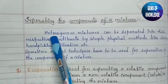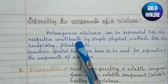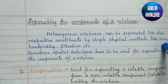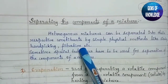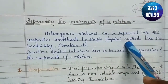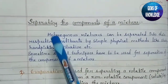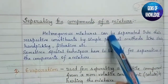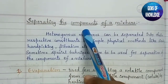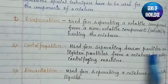Heterogeneous mixtures can be separated into their respective constituents by simple physical methods like sieving, hand picking, and filtration. There are many physical methods by which we can separate heterogeneous mixtures, and these are some special techniques used in separating the components of a mixture.